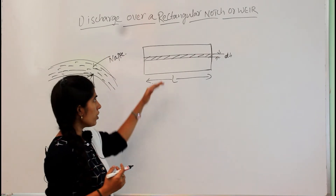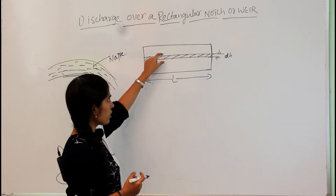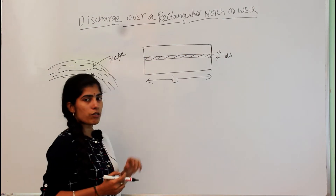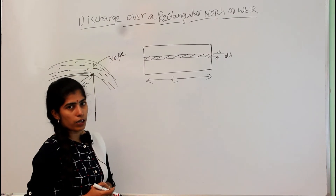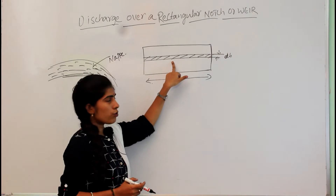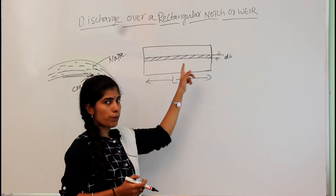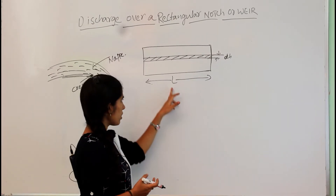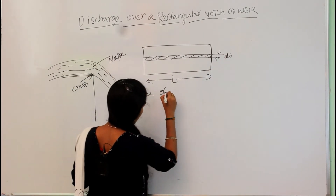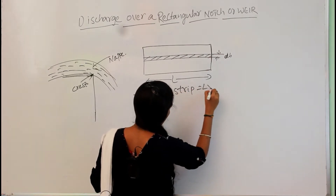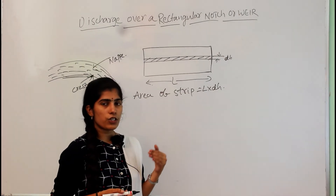For all weirs and notches, first we consider a very small strip and later we integrate that strip. Whatever discharge equation we get for this strip, we integrate it over the entire dimensions of the notch to get the total discharge equation for the rectangular weir. This small strip has a length L and thickness dh, so the area of the strip equals L multiplied by dh.